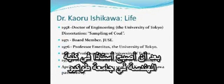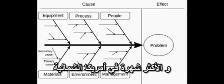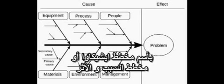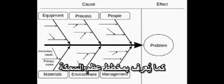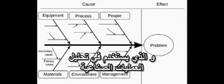After becoming a full professor in the faculty of engineering at the University of Tokyo, Ishikawa introduced the concept of quality circles. He was an influential quality management innovator, best known in North America for the Ishikawa, or cause and effect diagram, also known as the fishbone diagram, used in analyzing industrial processes.